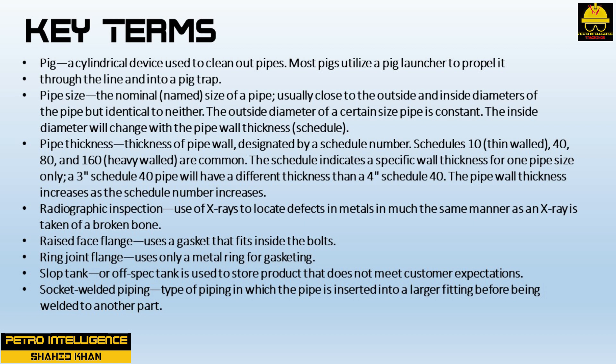A pig is a cylindrical device used to clean out pipes; most pigs utilize a pig launcher to propel it through the line and into a pig trap. Pipe size is the nominal or name size of a pipe, usually close to the outside and inside diameters but identical to neither. The outside diameter of a certain size pipe is constant; the inside diameter will change with the pipe wall thickness or schedule. Pipe wall thickness is designated by a schedule number — schedules 10 (thin-walled), 40, 80, and 160 (heavy-walled) are common. The schedule indicates a specific wall thickness for one pipe size only; a 3-inch schedule 40 pipe will have a different thickness than a 4-inch schedule 40.